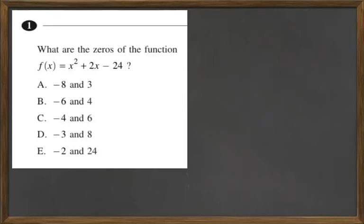Welcome to my series on Free Practice Test 7. We're going to start off with question 1, and it's asking what are the zeros of the function f of x equals x squared plus 2x minus 24, which means it's a quadratic equation.